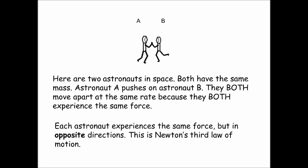Here's another really good example of Newton's third law of motion. Here are two astronauts in space. Both astronaut A and astronaut B have the same mass. If astronaut A pushes on astronaut B, they both move apart at the same rate because they both experience the same force. The action force applied to astronaut B by astronaut A, and the reaction force that astronaut A receives from astronaut B, are going to be exactly the same — equal forces in opposite directions. That's the action-reaction pair.